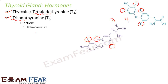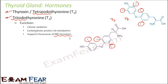Both T3 and T4 help in cellular oxidation — the process of oxidizing glucose to release energy in the form of ATP molecules inside each cell. They also help in carbohydrate, protein, and fat metabolism by breaking down complex substances into simpler forms. Additionally, they support RBC formation, which is critical for survival, and help maintain water and electrolyte balance in the body.